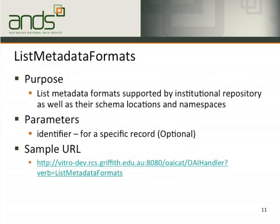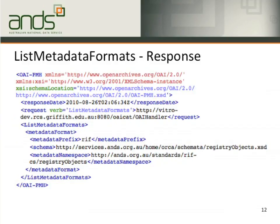The second verb is ListMetadataFormats. The purpose is to show all the possible metadata formats in your institutional repository, including schema location and namespace. In this example response, the metadata prefix was RIF, which means Griffith's unit OAI cat only supports the RIF-CS metadata format.